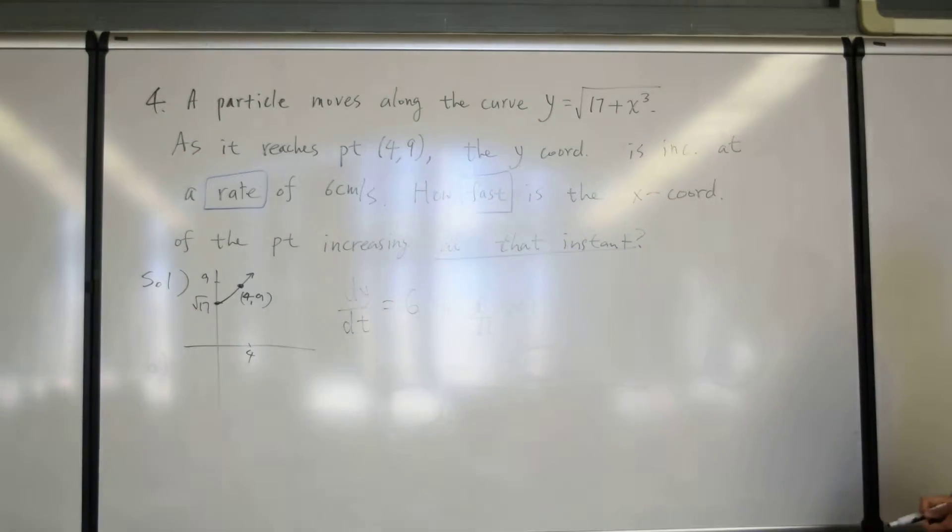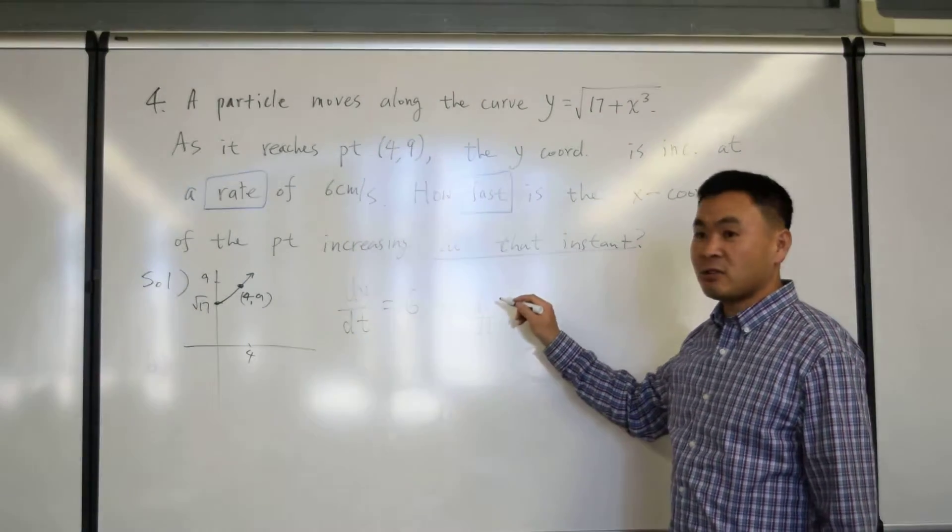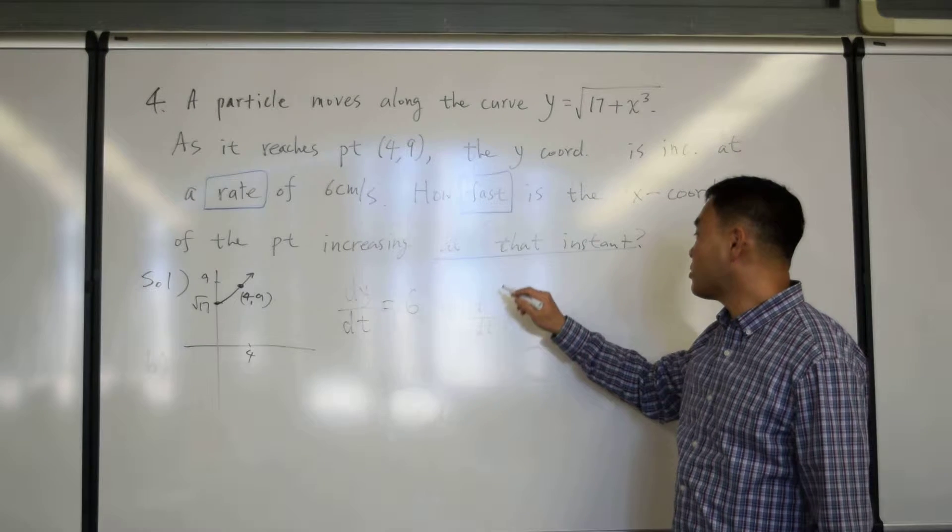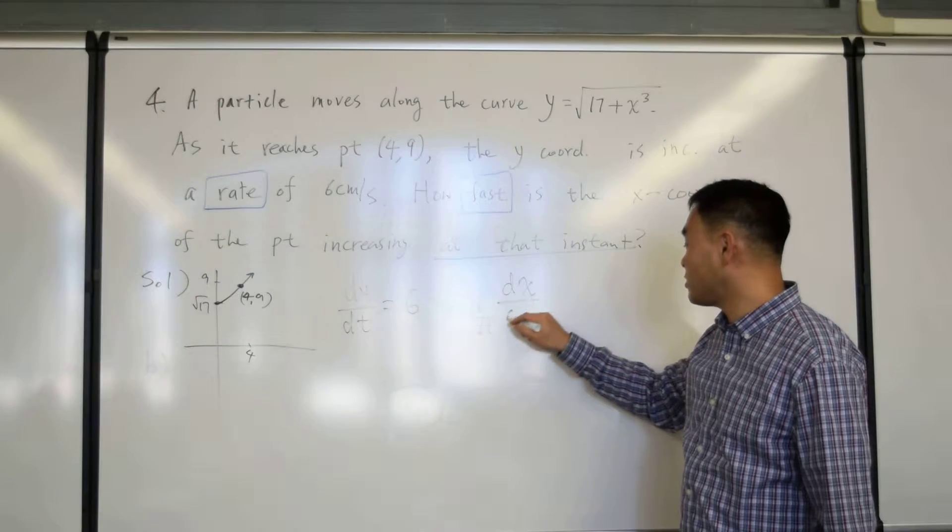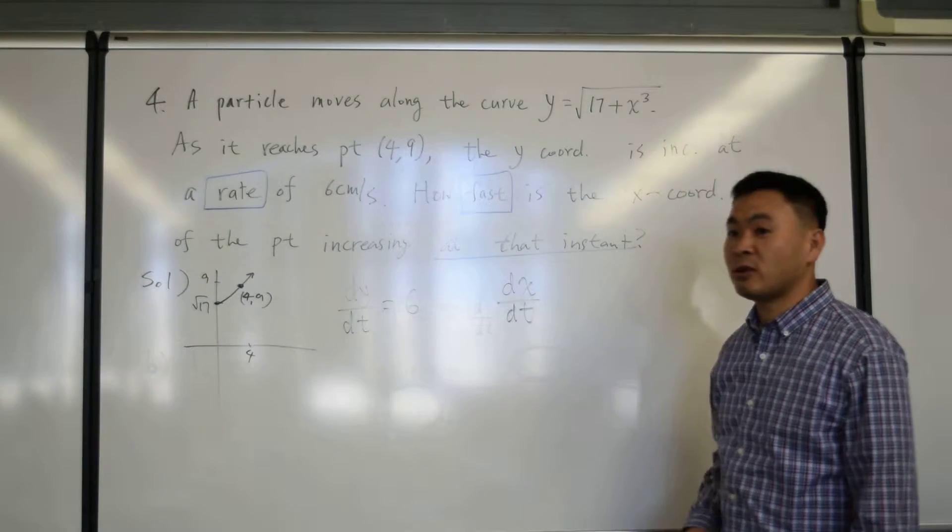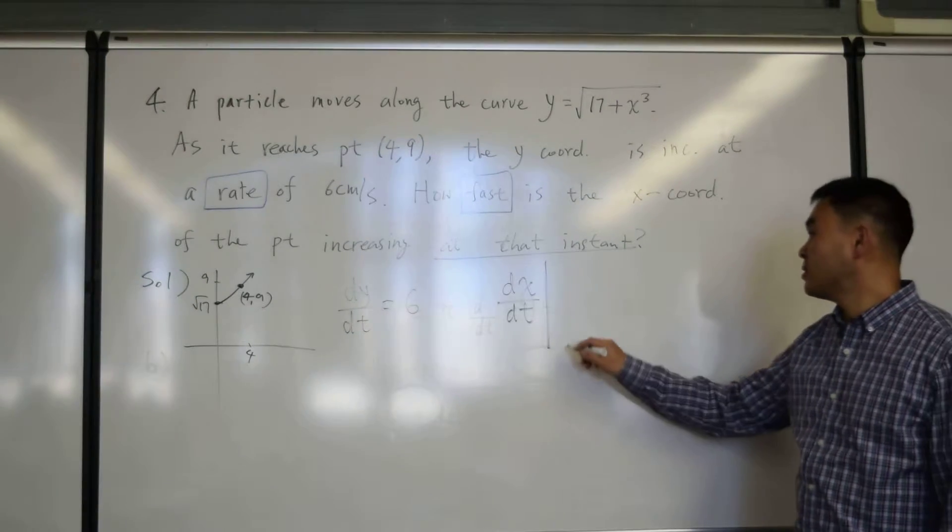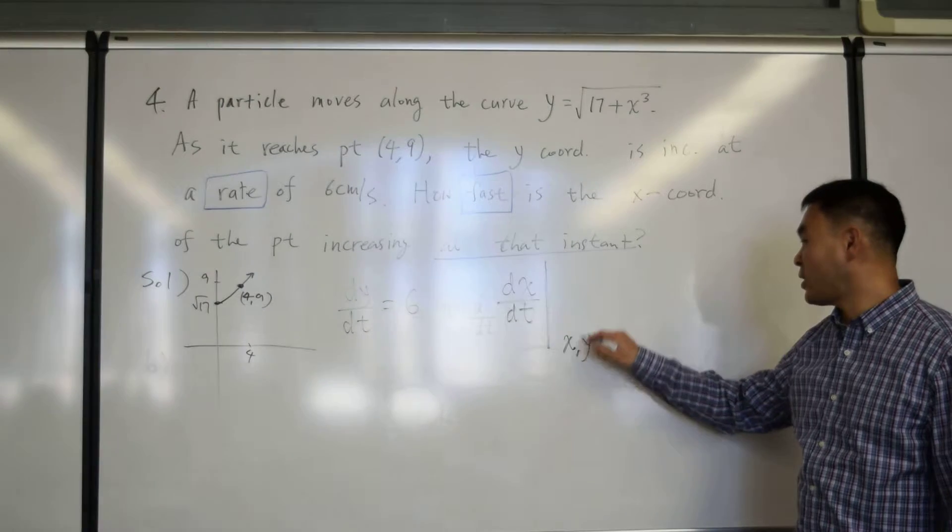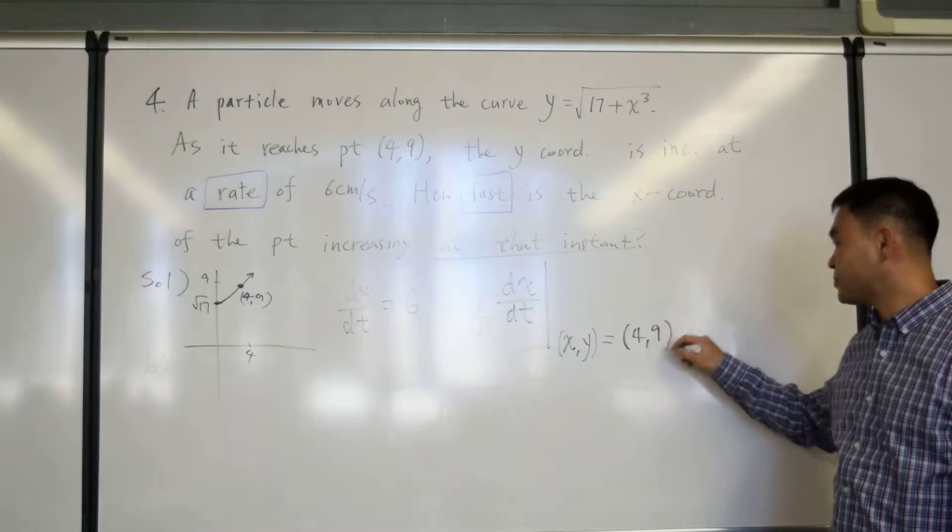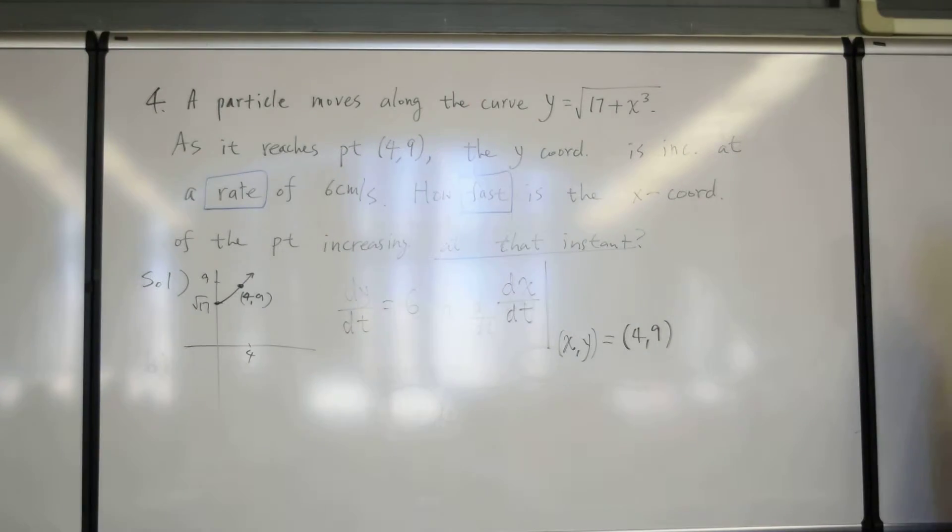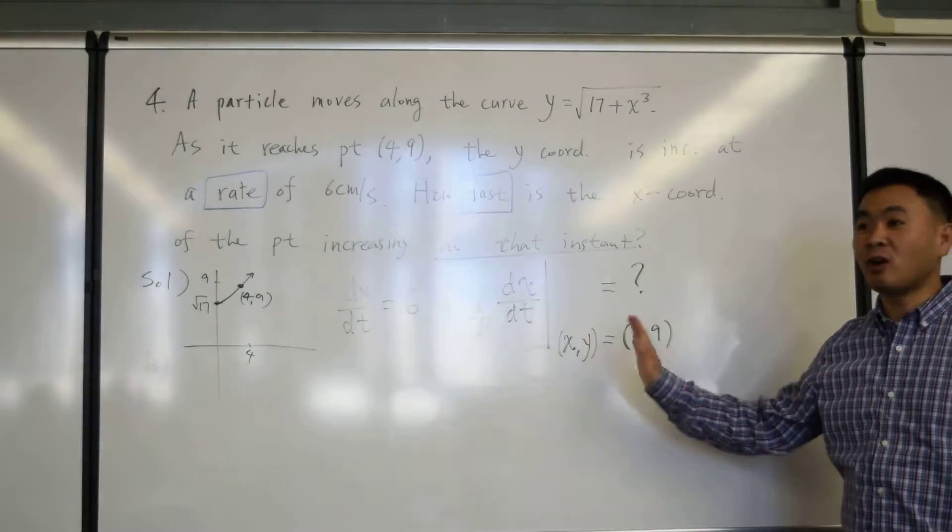How fast is the x coordinate of the point increasing at that instant? So, this is the question. You're trying to ask, how fast is x increasing, dx dt is increasing, at what instant? When x, y is at 4,9. See, if you can write these, then you're almost done, okay?